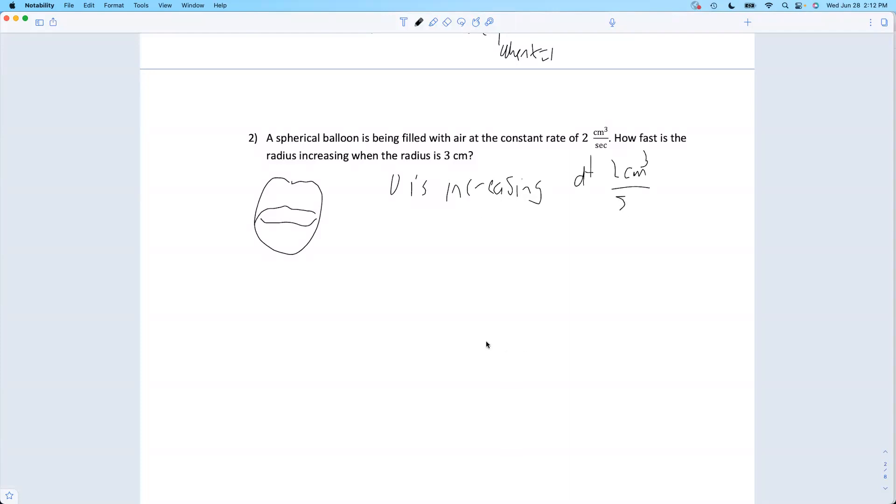I want to know how fast is the radius changing at a particular moment in time. So I want dr/dt, the rate of change of the radius with respect to time at a particular moment in time when r happens to be 3.